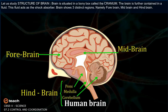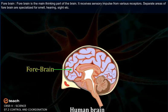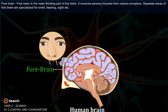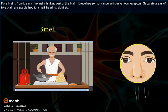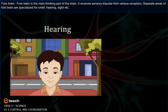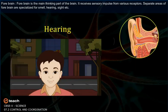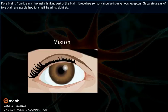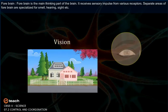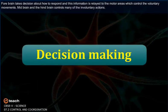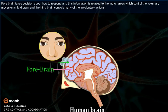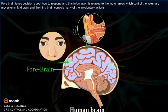The forebrain is the main thinking part of the brain. It receives sensory impulses from various receptors, and separate areas of the forebrain are specialized for smell, hearing, sight, and so on. The forebrain takes decisions about how to respond, and this information is relayed to the motor areas.